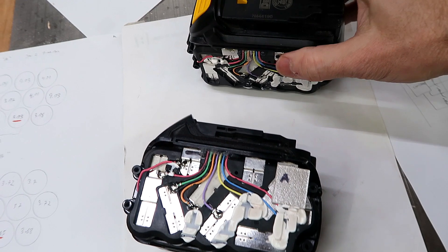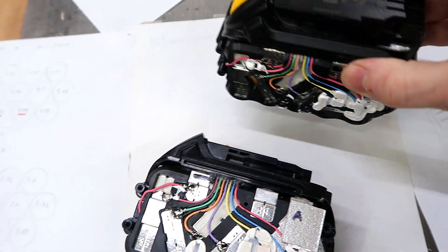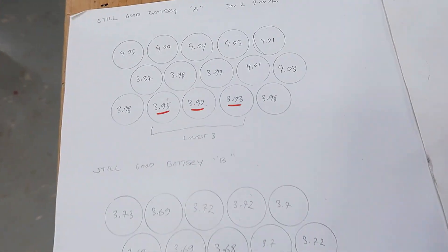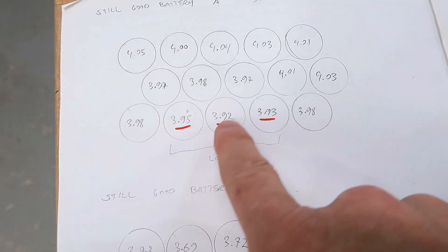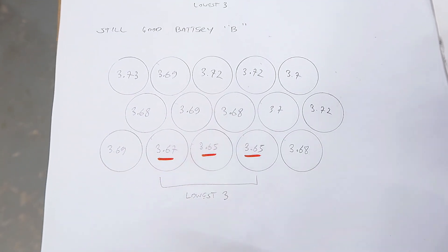So I opened up two more FlexVolt battery packs. These are still good. And I measured the voltage of every cell, and these three cells in both packs had the lowest voltages on them. So those three cells being low in charge seems to be a systematic problem, and I think I know why.